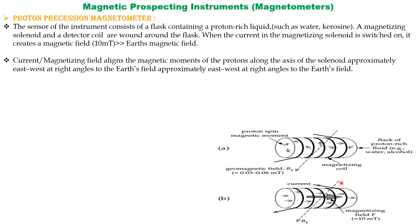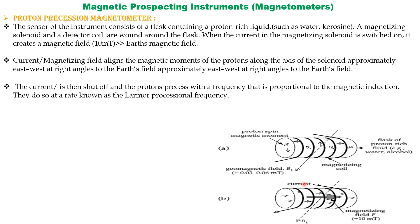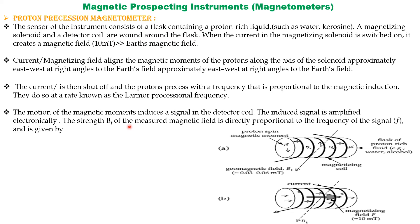When the current is switched off, the protons precess around the Earth's magnetic field direction with a frequency proportional to the magnetic induction — this is known as the Larmor precessional frequency. The motion of the magnetic moments induces a signal in the detector coil, which is electronically amplified. The strength of the geomagnetic field is proportional to the frequency of the signal, where gamma is the gyromagnetic ratio. The precessional frequency for Earth's magnetic field is generally 1.2 to 2.5 kilohertz, in the audio frequency range.